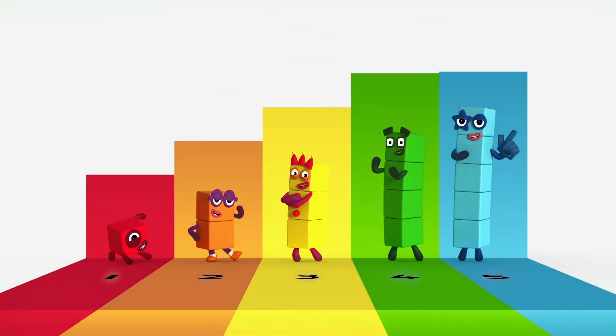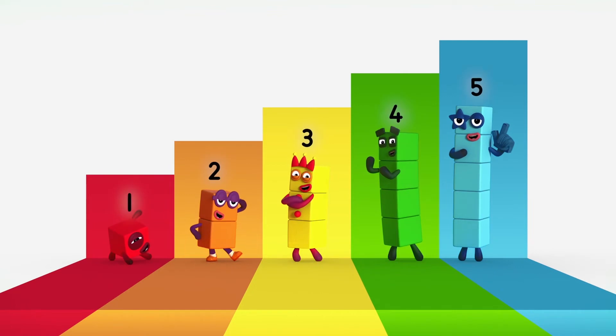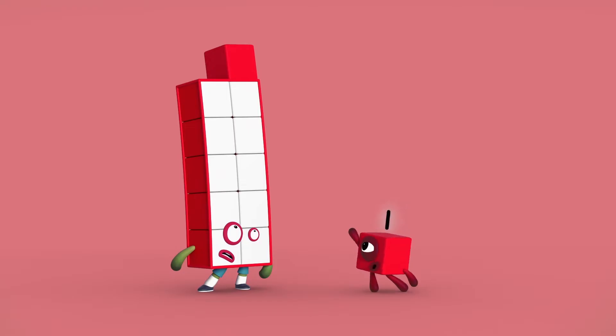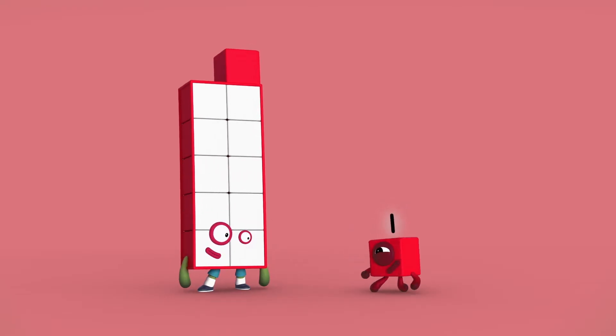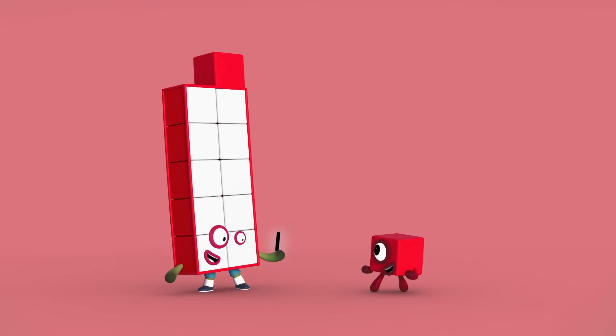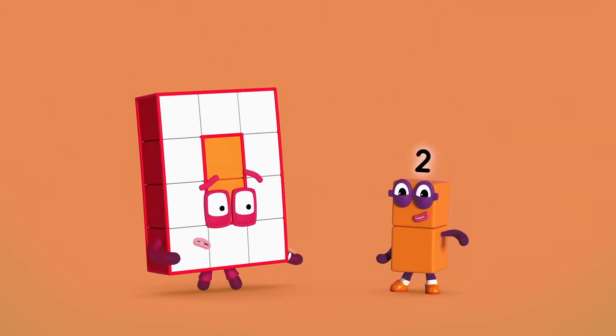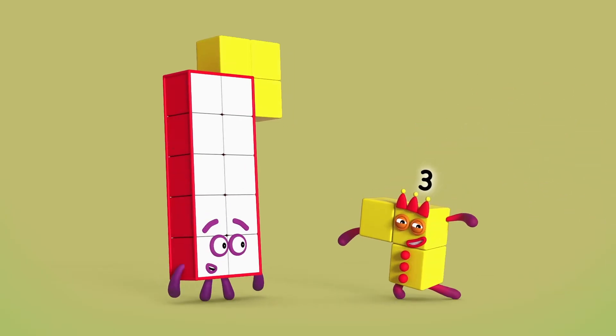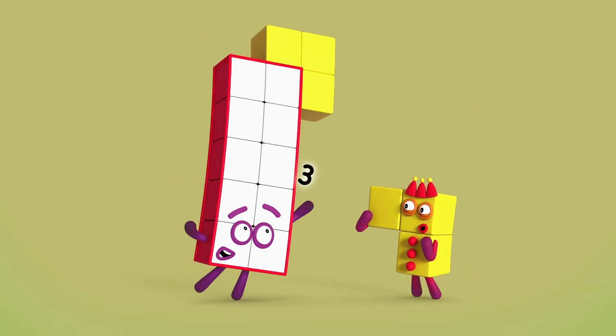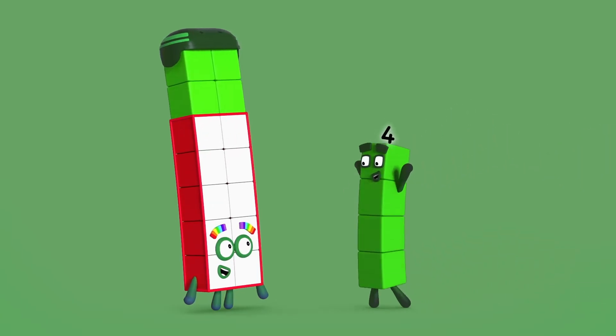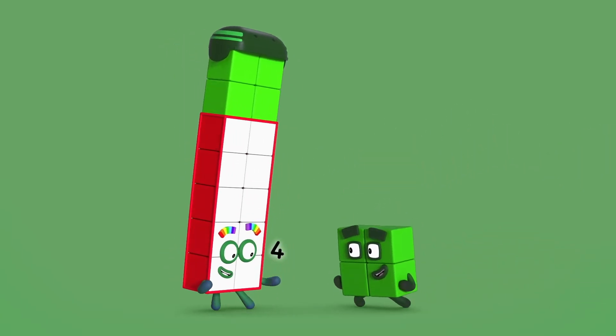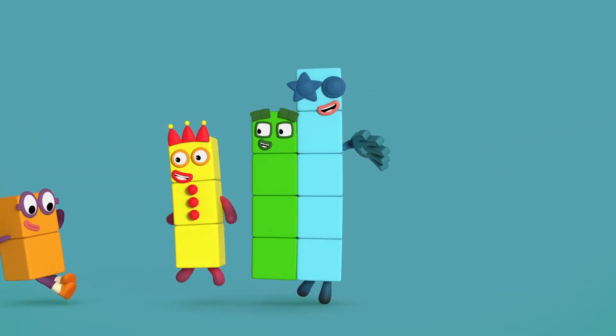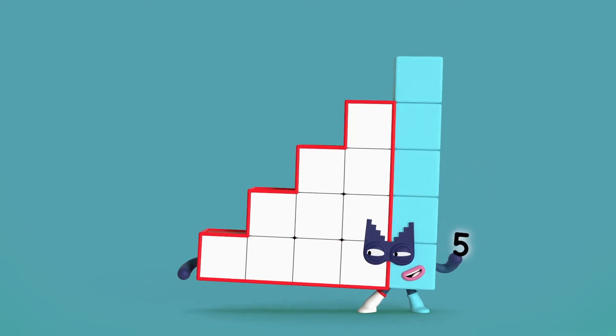The super special secret step squad is here. Step one. Look. On top of your big block, you've got one red block. Like me. Step two. You've got two orange blocks. Like you. Step three. Look at me. Hey! Step four. Four green blocks. And step five. Five blue one blocks. Hush, hush!